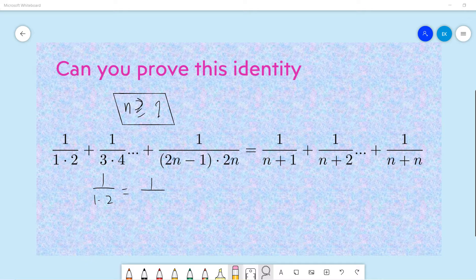So the left hand side is 1 plus 1 divided by 1 times 2 plus 1 divided by 3 times 4 up to 1 divided by 2n minus 1 times 2n. And the right hand side is 1 divided by n plus 1, 1 divided by n plus 2, 1 divided by n plus 3, and up to 1 divided by n plus n.